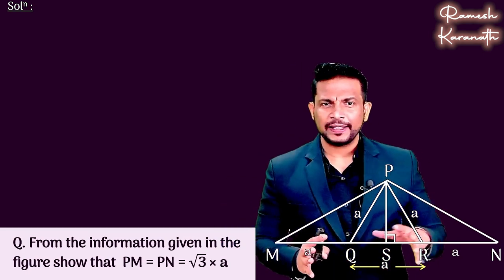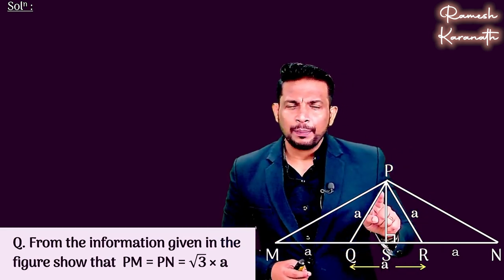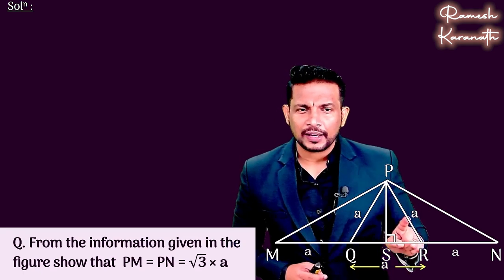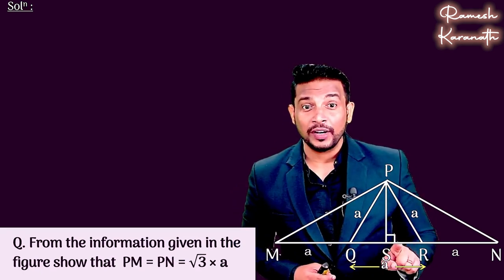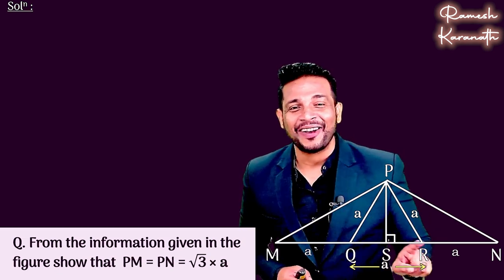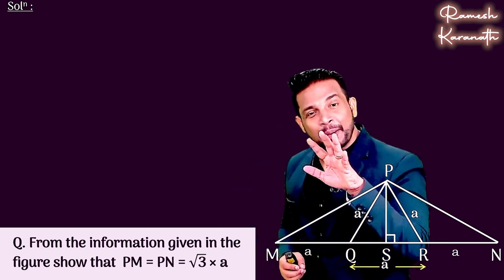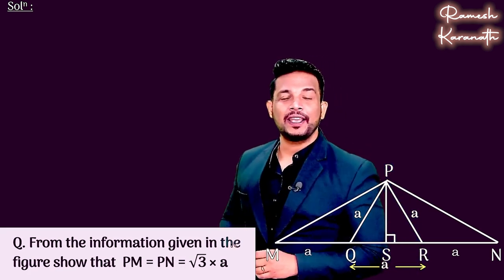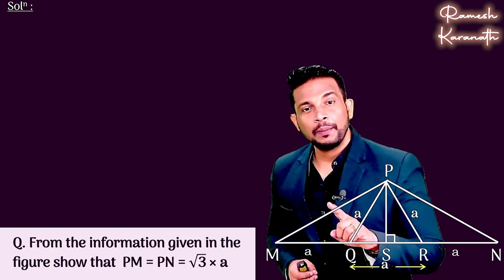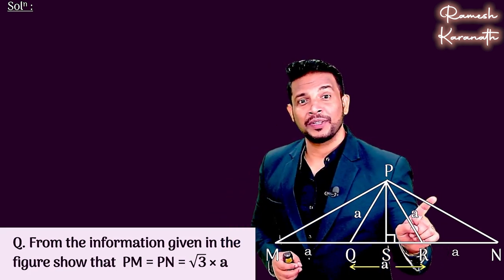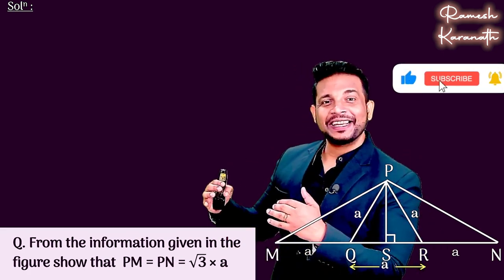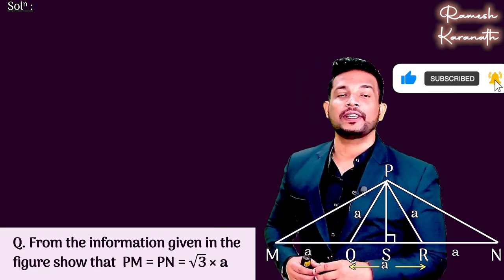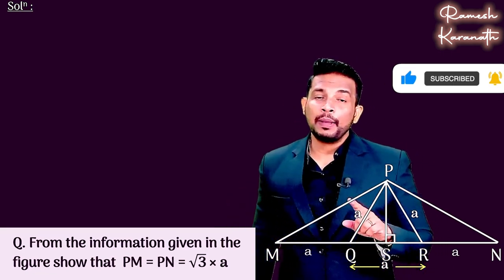When you look at the information, what have we given in the figure? We have PQ, PR, QR, QM, and RM. So we have 5 segments which have a unit, and we have to show PM and PN. If we look at PM, we need to find the value.